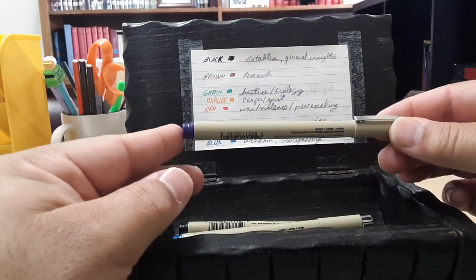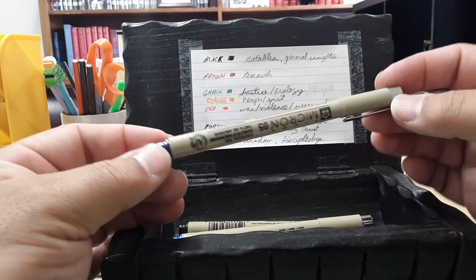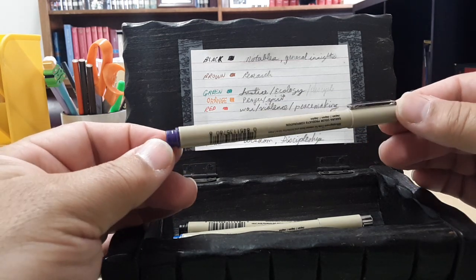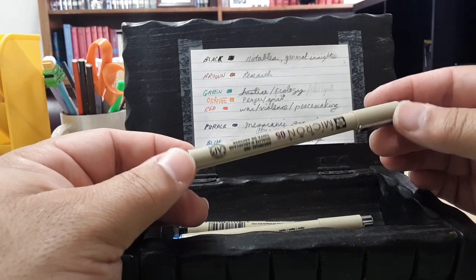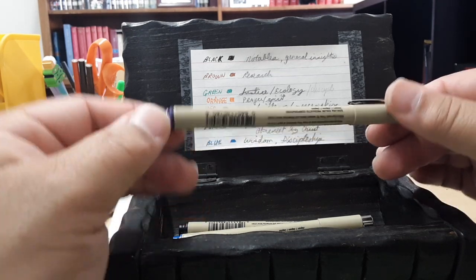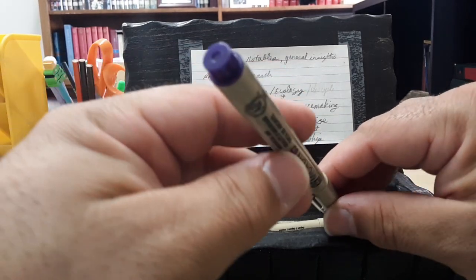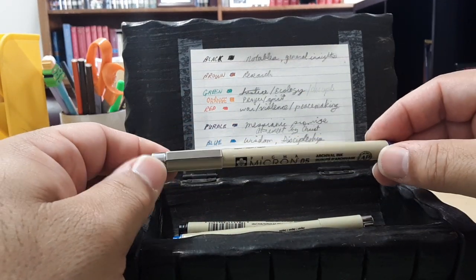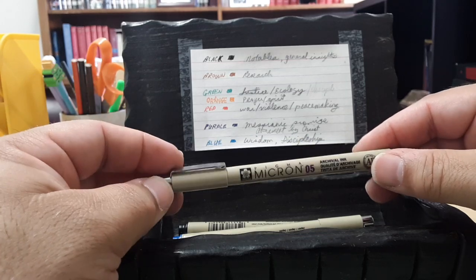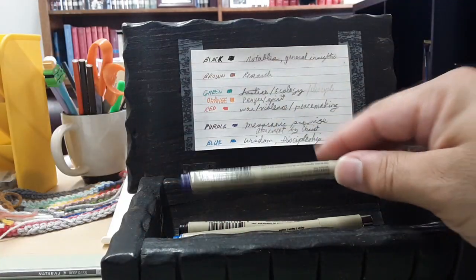Purple is one of my favorites. Purple points to anything messianic. Messianic promises, atonement, foreshadowing of Christ, and anything to do with Jesus or covenantal promises. Covenants, messianic promises gets purple. So that gets used a lot.